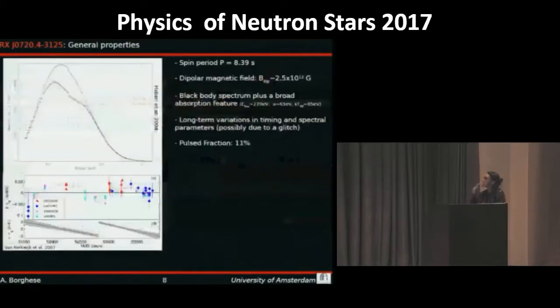So we started by detecting the first phase-dependent absorption feature in J0720. This neutron star has been discovered as an isolated neutron star pulsating at a period of 8.4 seconds. Here in the plot we have the phase average spectrum, well modeled by a black body component plus a broad absorption feature.